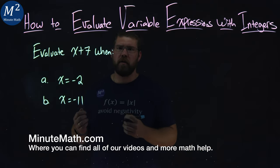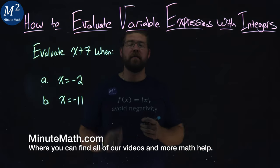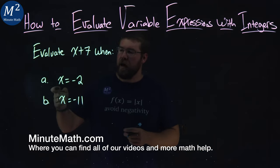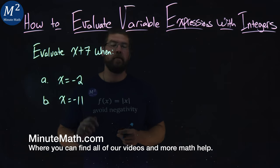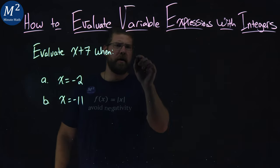We're given this problem here. Evaluate x plus 7 when x equals negative 2 and x equals negative 11. It's a two-parter. Let's start with part A.